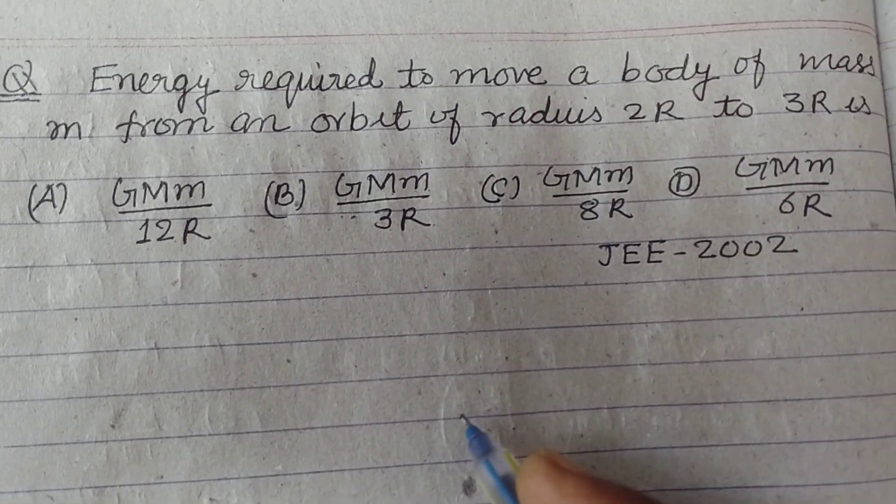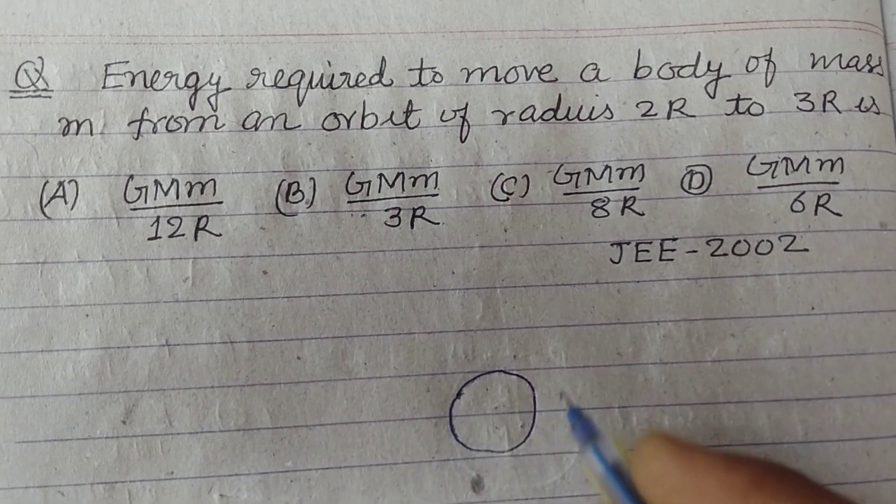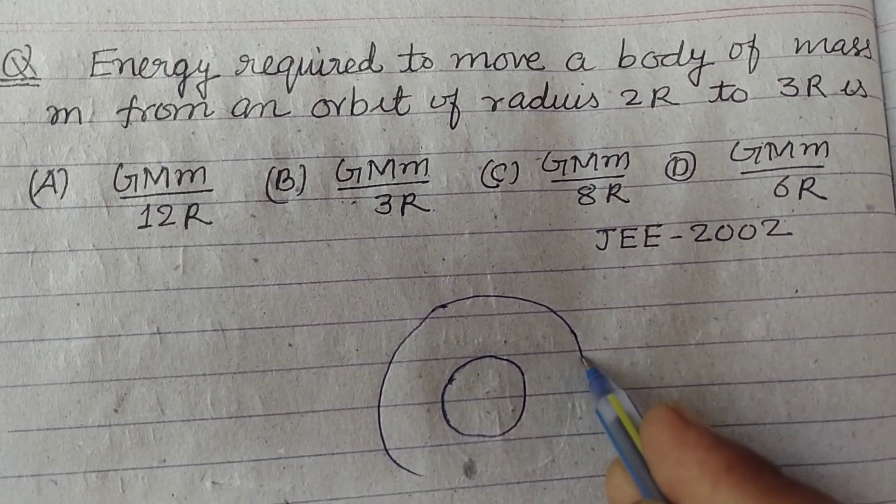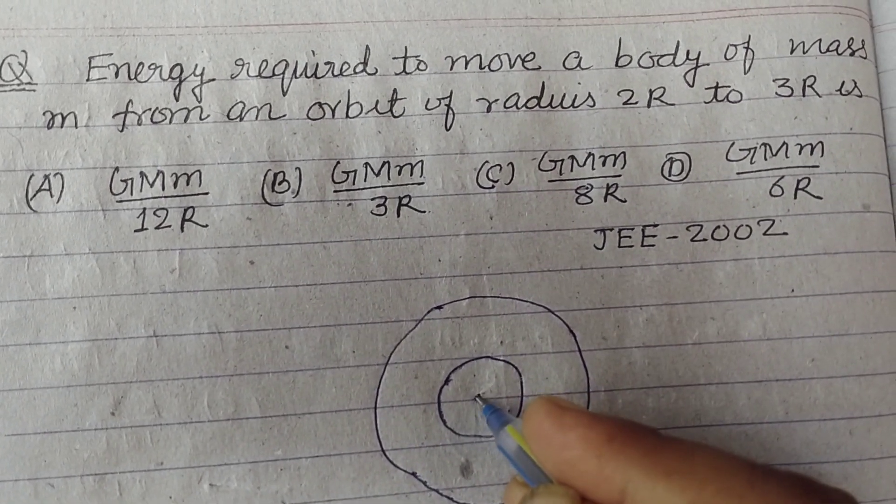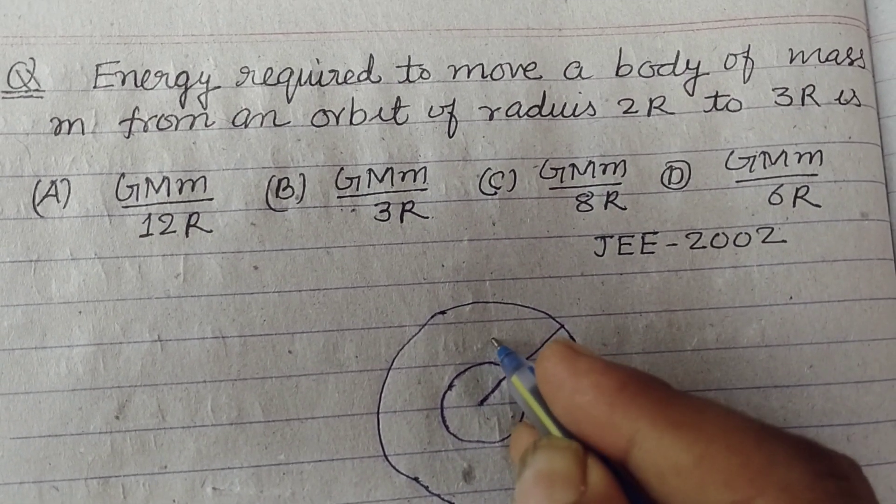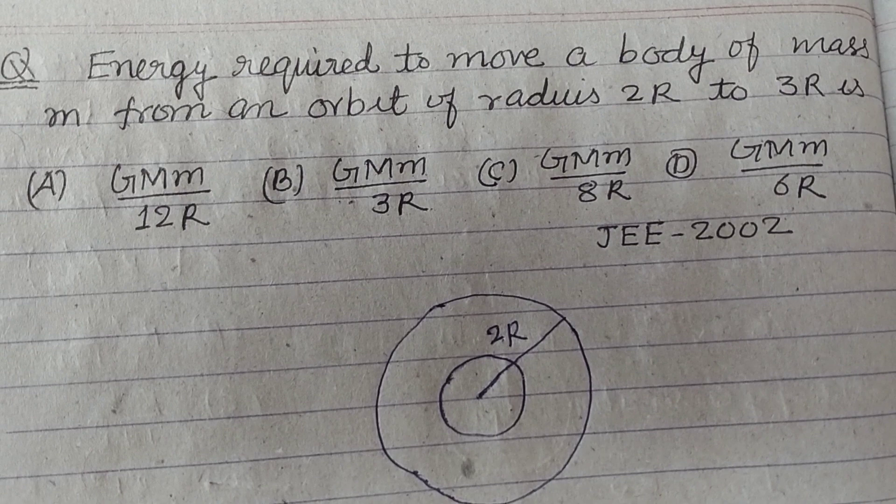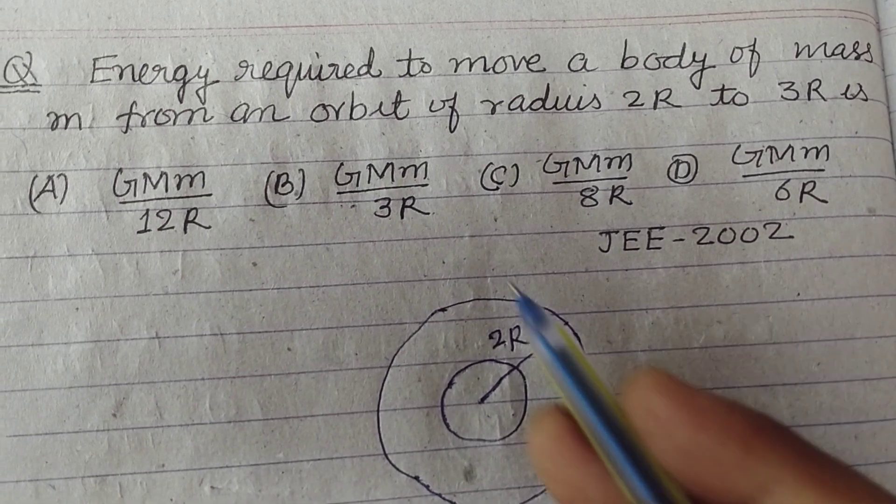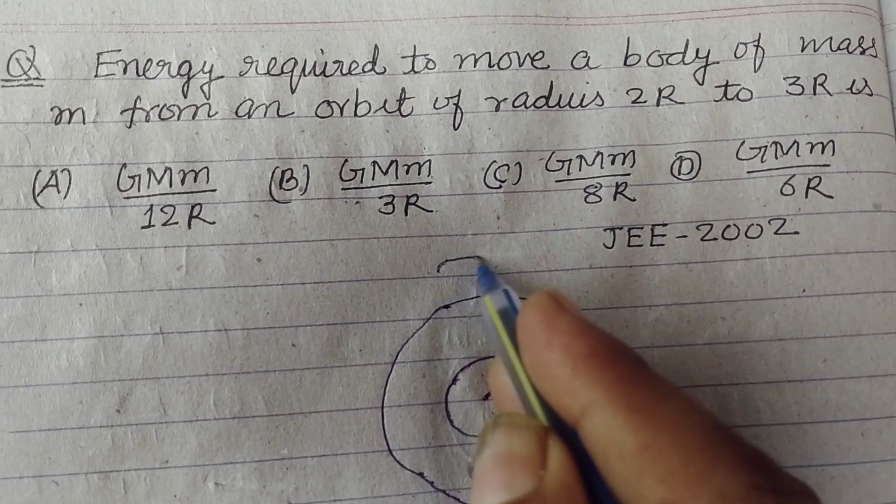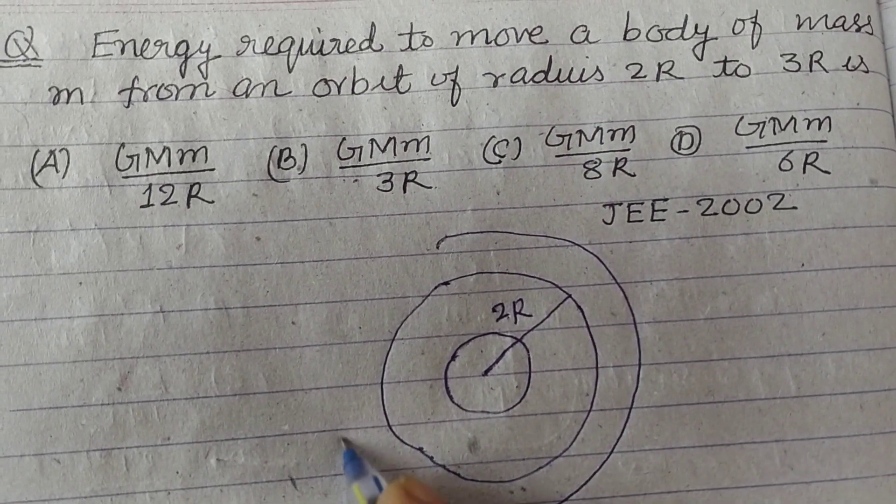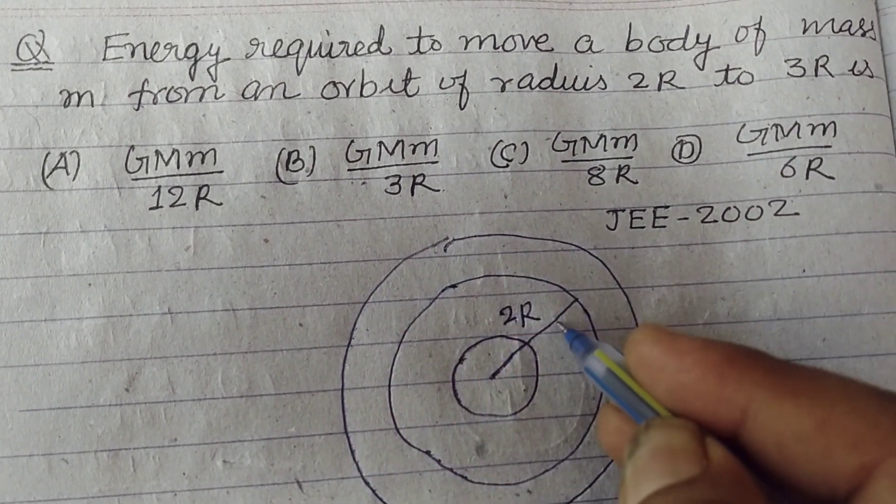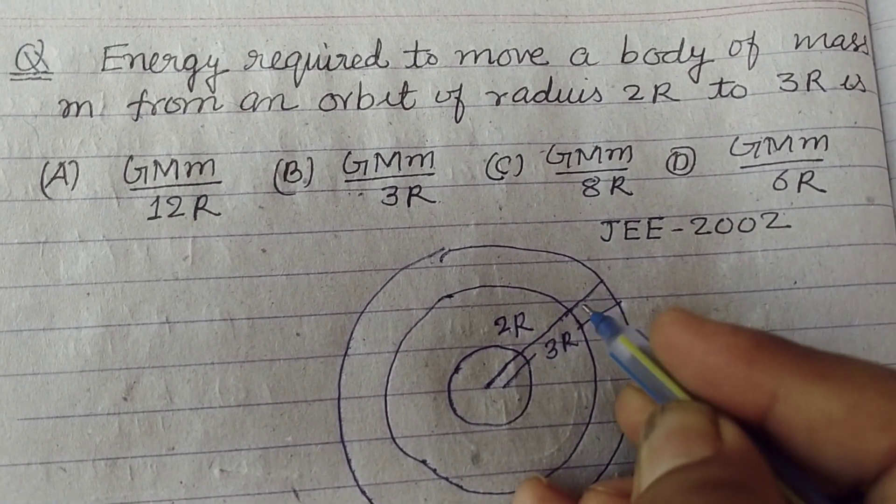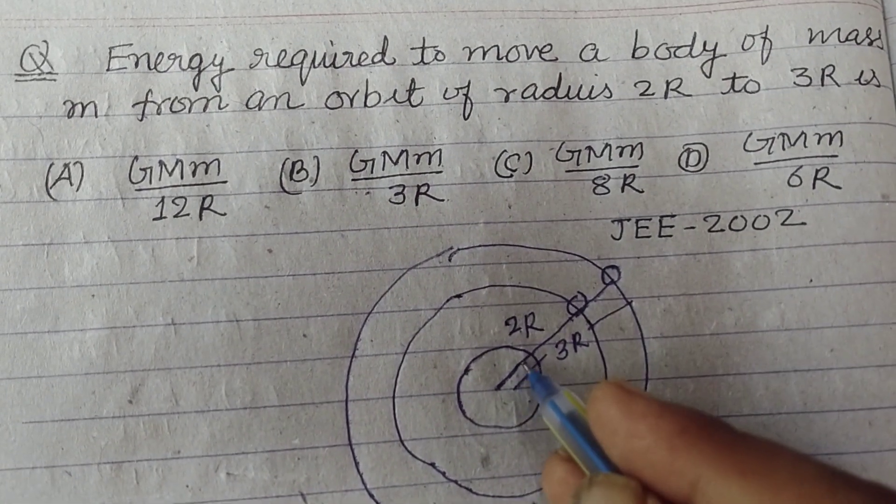So student, here is Earth and a satellite is moving in orbit from Earth's center at distance 2R, and when we bring this body from 2R to 3R, the question is asking the energy required to move this mass body from 2R to 3R.